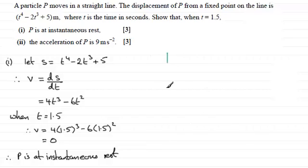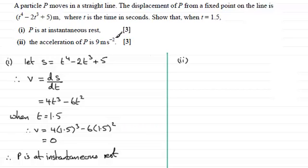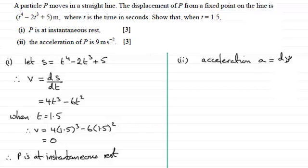Now for the second part, we're asked to show that when t equals 1.5 the acceleration of p is 9 meters per second per second. The acceleration a is defined as the rate of change of velocity with respect to time, dv by dt.